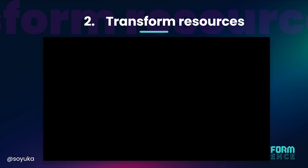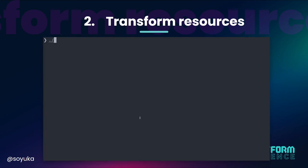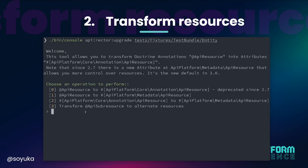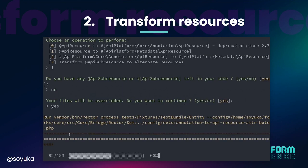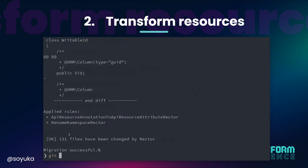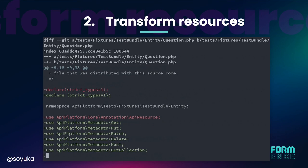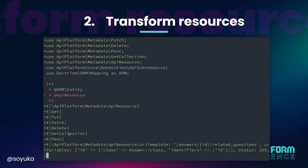The second step is to transform the resources. Same command, but this time I will pick another option, which is to upgrade my API Platform annotation to the new PHP 8 attribute. You can also use other options to upgrade annotation to API Platform 2.6 PHP attribute. It asks if we have API sub-resources left, because if we do, you need to transform them first. Once done, let's take a quick look at a class to see what changes — it removed the API resource annotation and added the new metadata.